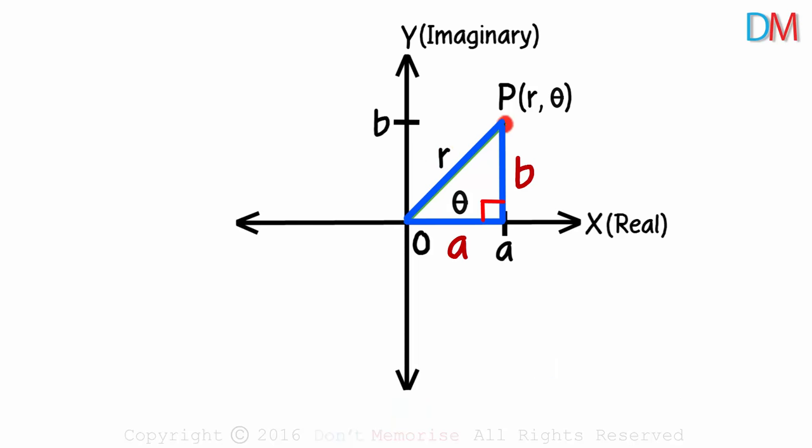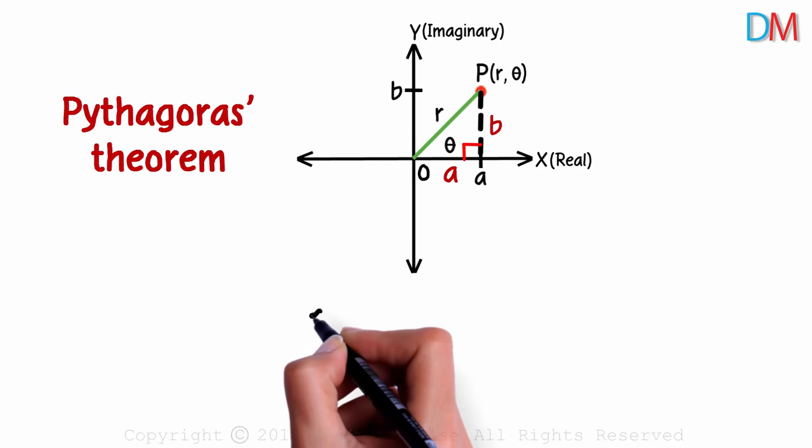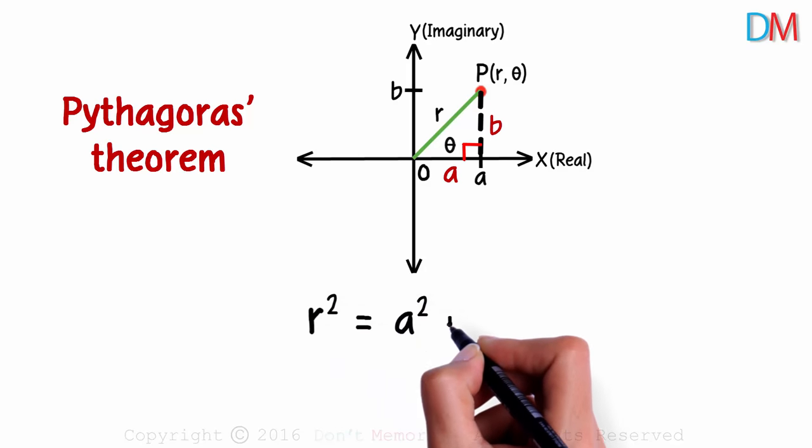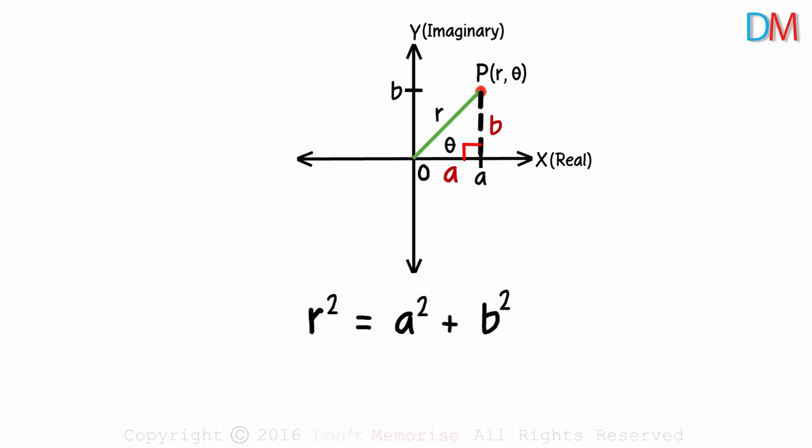As this is a right triangle, we can use the Pythagoras theorem to find r. r squared will equal a squared plus b squared. The square of the hypotenuse is equal to the sum of the squares of the other two sides. Taking the square root on both sides, we get the value of r as root of a squared plus b squared.